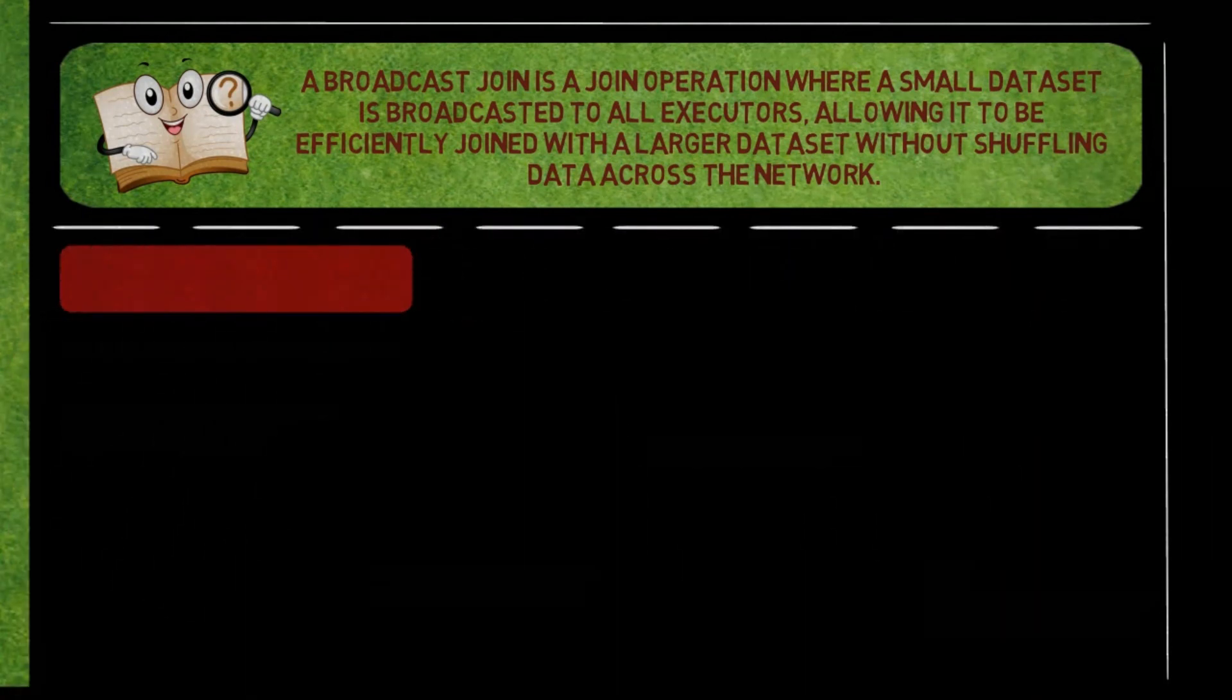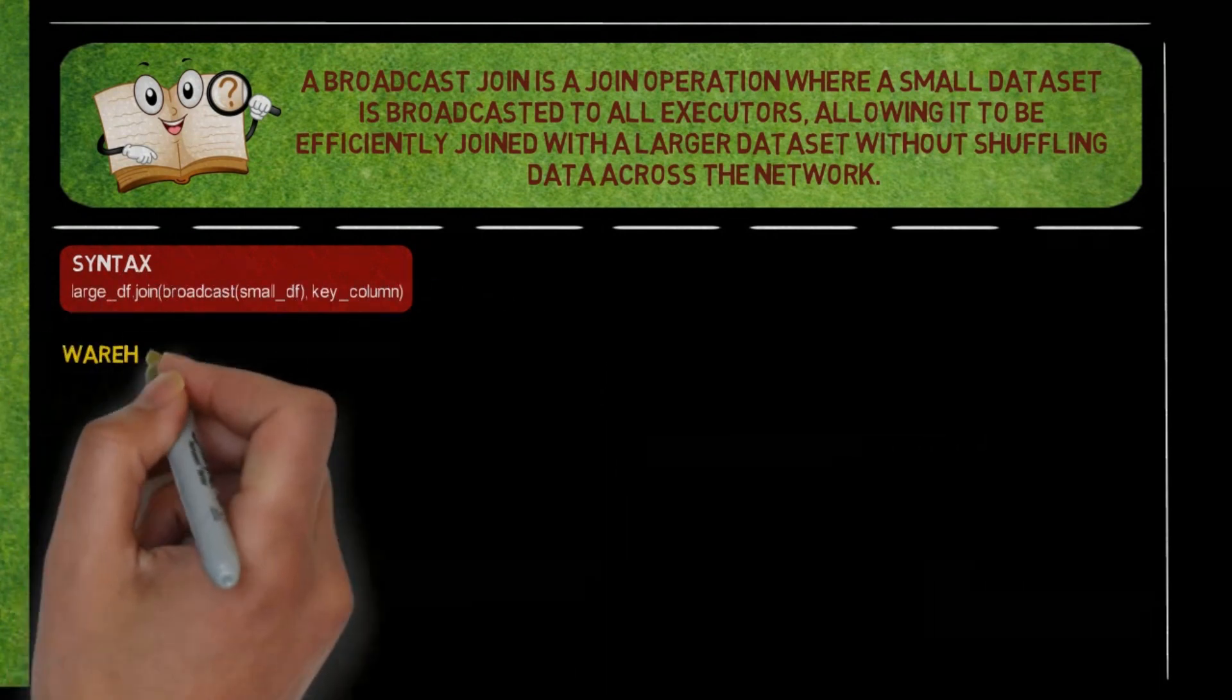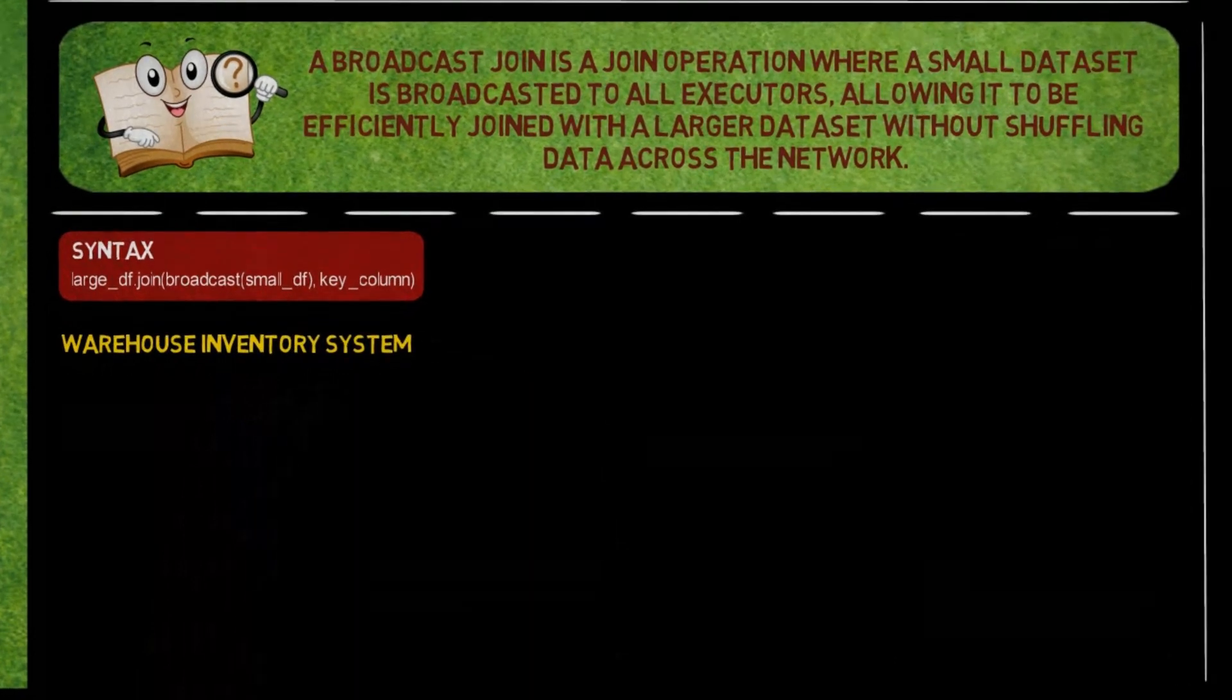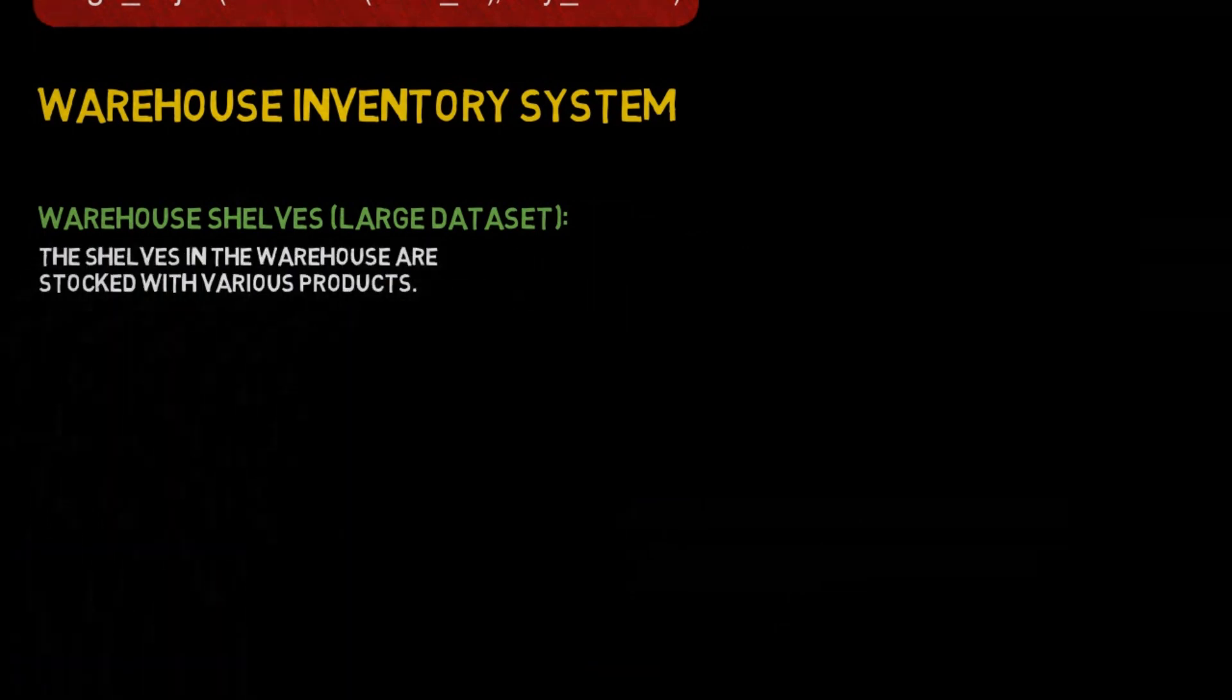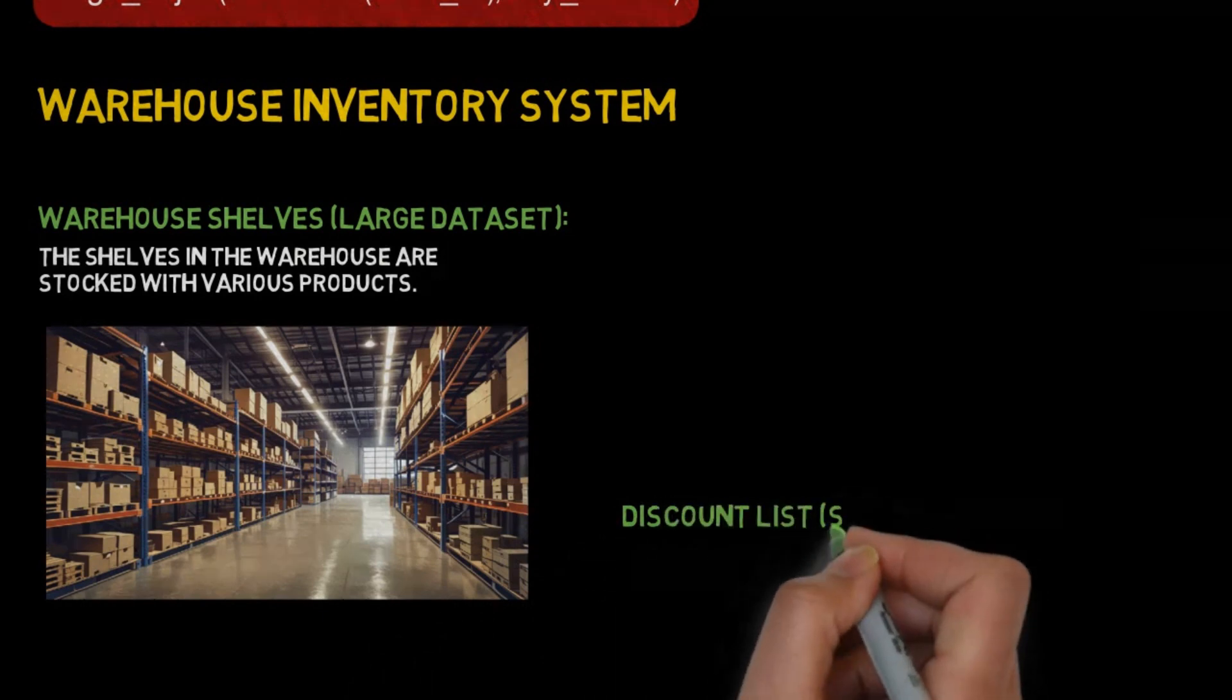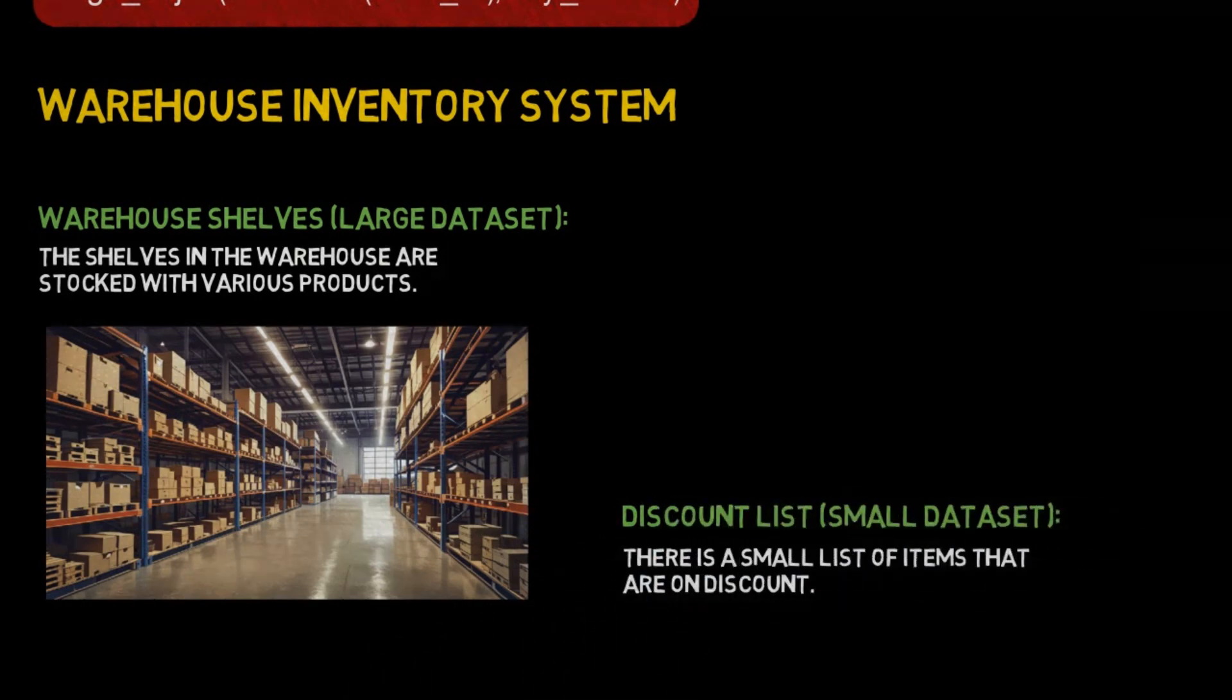Here's an example to help understand the concept of a Broadcast Join. Warehouse Inventory System: Think of a large warehouse with many shelves of products and a small list of discounted items that changes frequently. Warehouse Shelves (Large Dataset): The shelves in the warehouse are stocked with various products. Discount List (Small Dataset): There is a small list of items that are on discount.